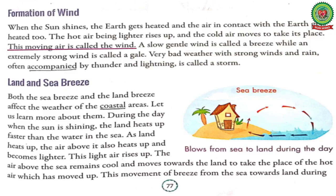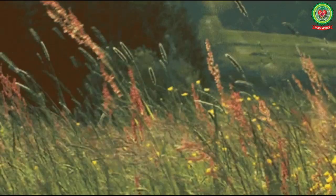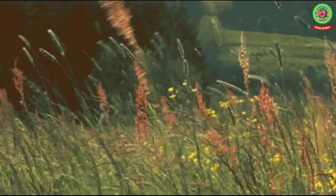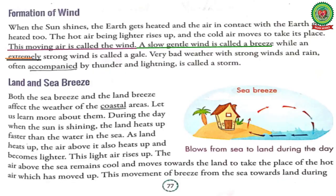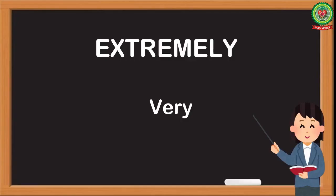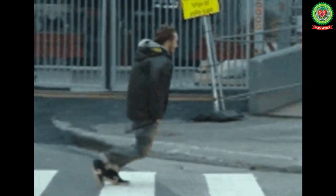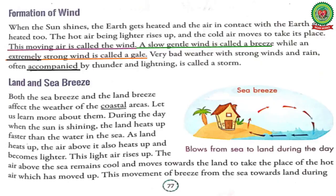So, moving air is called wind. A slow gentle wind is called a breeze. If the wind is extremely strong, it is called a gale — underline the word 'extremely' and write its meaning: very strong. So, a very strong wind is called a gale.